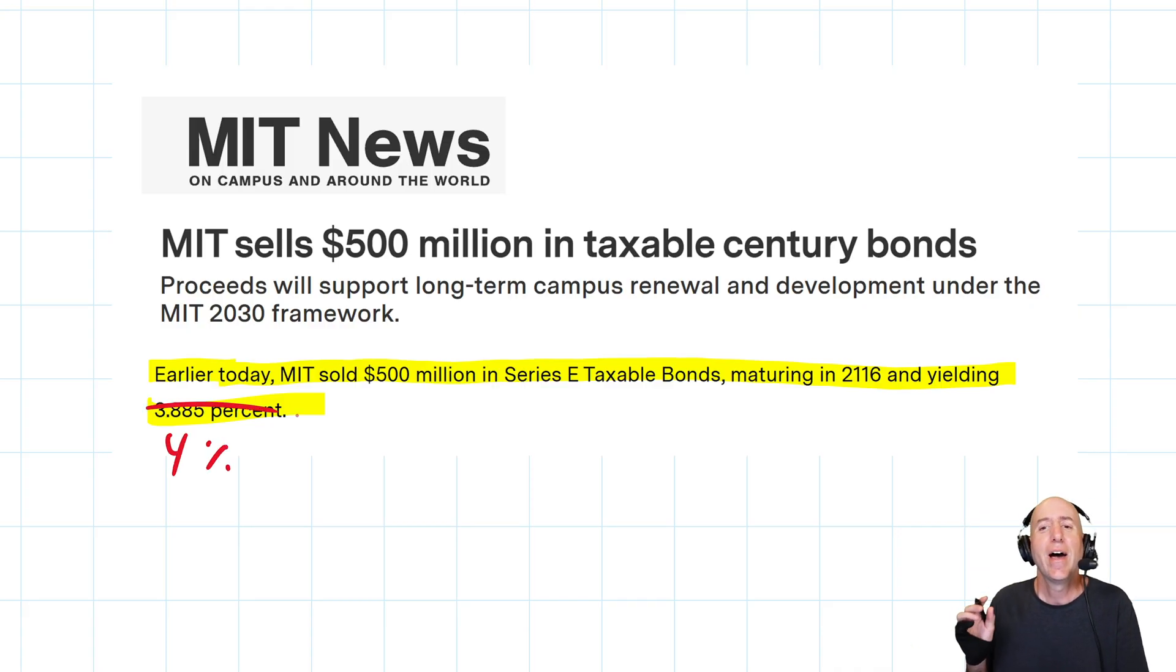This is a funny turn of phrase - 'MIT sells bonds.' What they could be saying and should be saying is 'MIT borrows $500 million.'